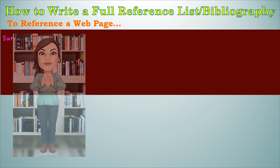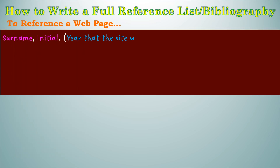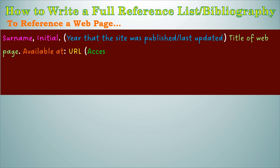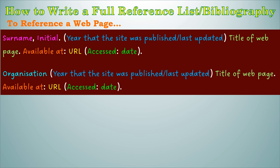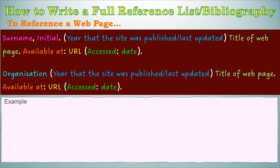To reference a website, you will need: the surname of the author, comma, initial, full stop, open brackets the year the site was either published or last updated, close brackets, the title of the web page, full stop, the words 'Available at:' colon and the URL, and in brackets 'Accessed:' and the date that you accessed it, full stop. If it's not an actual person but an organisation that published the web page, then you just put the organisation at the front rather than the surname and initial. Here are examples of both.